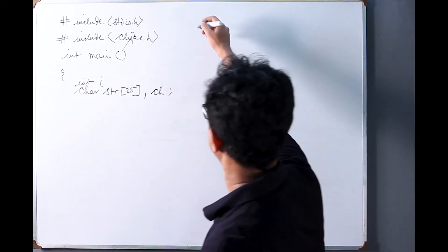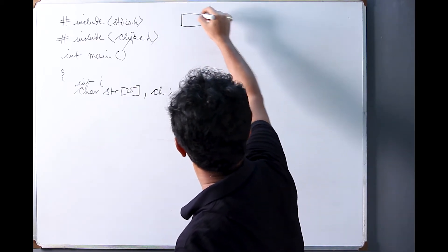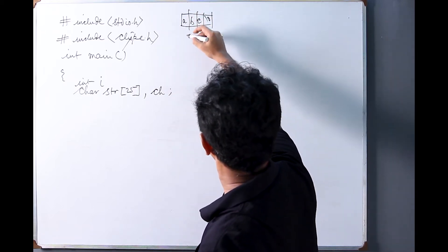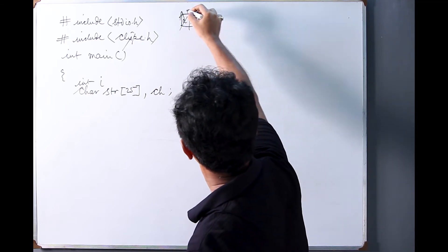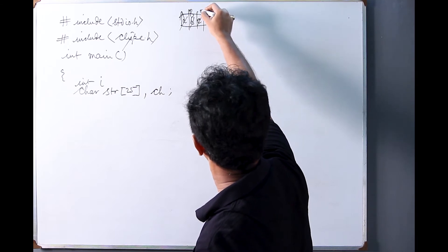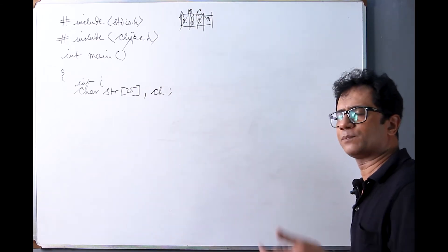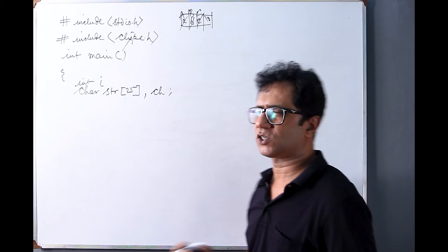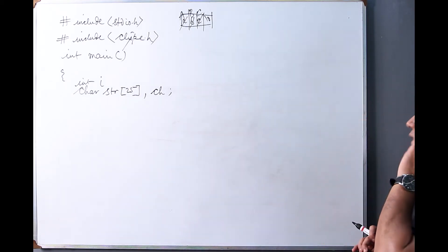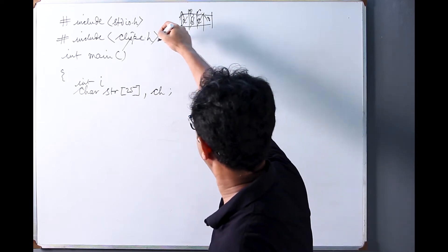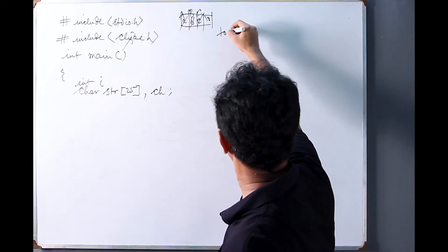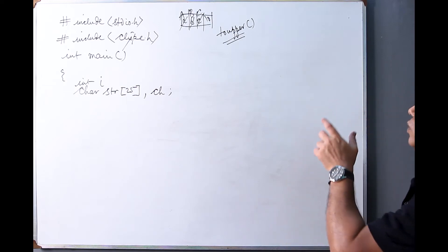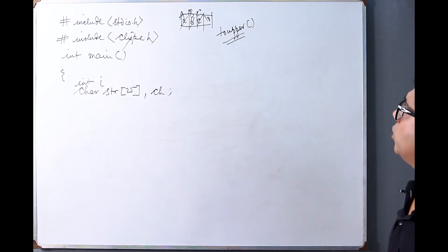One by one we will take input from the user to be assigned into the string. Our purpose in this program is: suppose the string is 'a b c' with a null character — 'a' should be converted to its capital, 'b' to its respective capital, 'c' to its respective capital. To change the case from lowercase to uppercase we can employ a function from ctype.h, which in this case is the toupper() function — it changes lowercase characters to uppercase character by character.